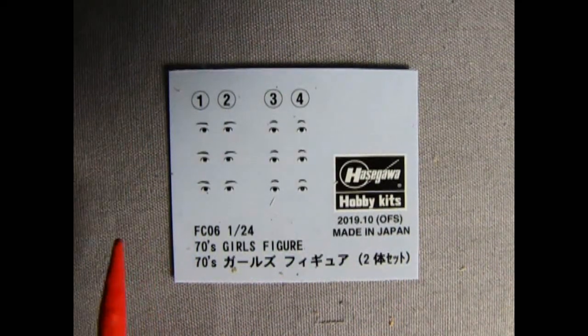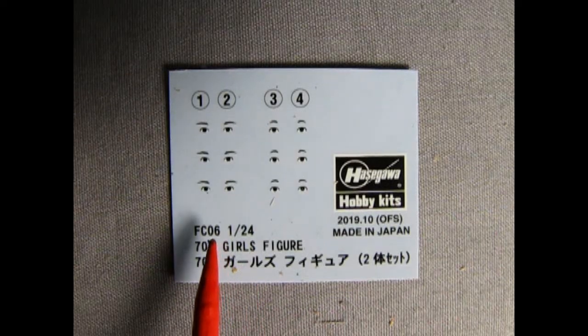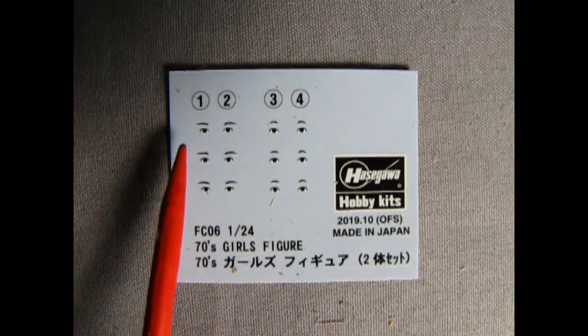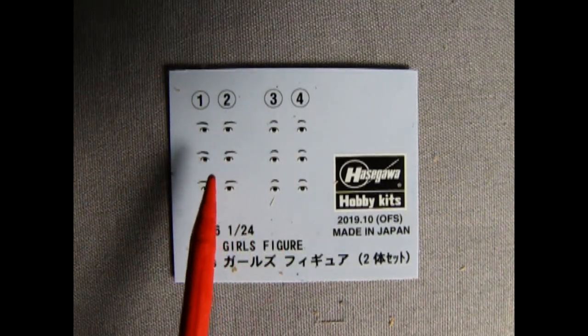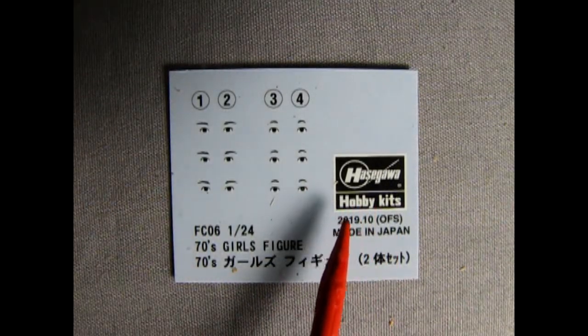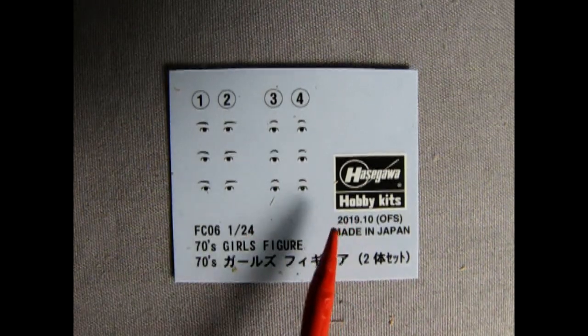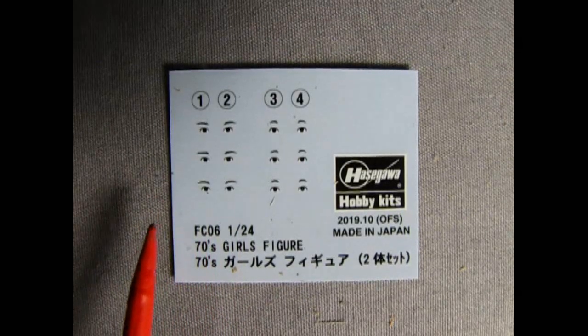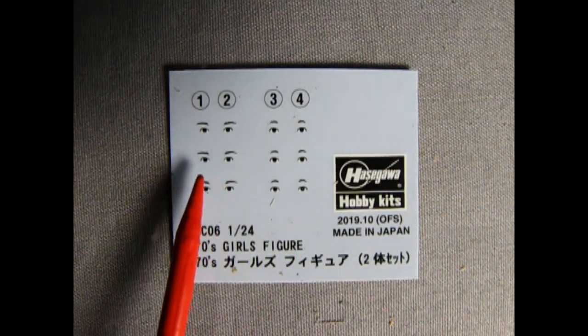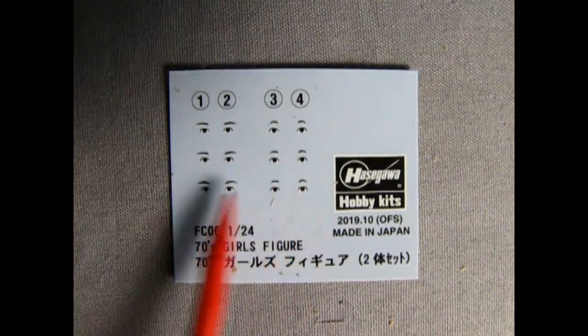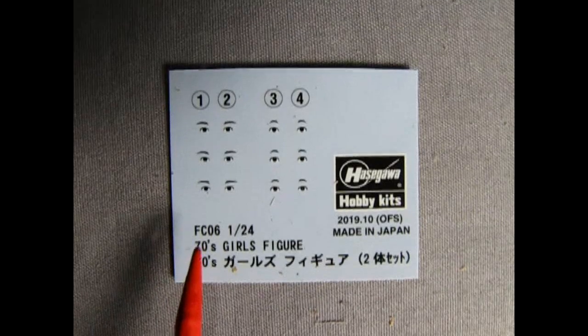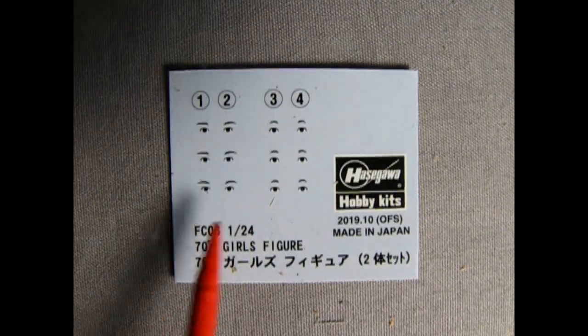Here's our decal sheet and these are the eyes for our girls. Hasegawa was really kind in giving us three sets of eyes for each girl, so you could use these on other 1:24 scale figures if you're able to not lose these when you're trying to get them out of the water. These are water slide decals after all. You also get the nice little Hasegawa hobby kits logo which you could put on any other model or as a display base or placard for this display. They're just basically black and white. It would have been nice if Hasegawa had these in different eye colors, like maybe black, brown, green, something like that, but they just chose to use them as black dots. But you could always go in with a really fine paintbrush and just add a little dot on to those of a different color if you want.